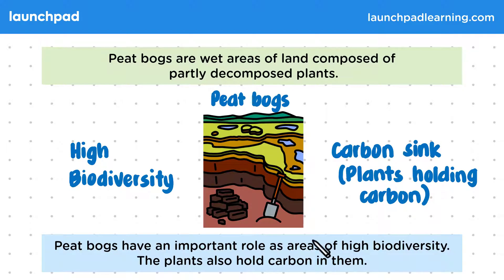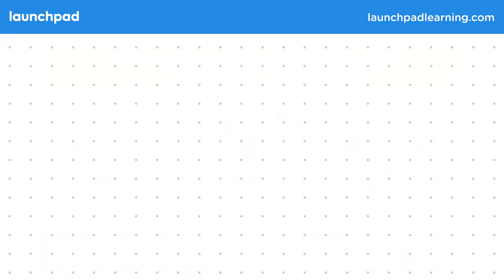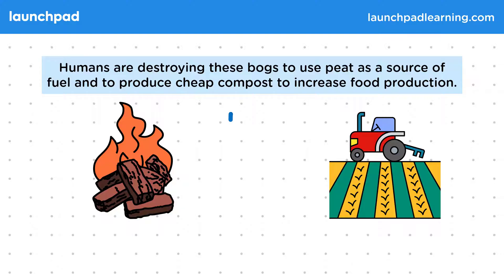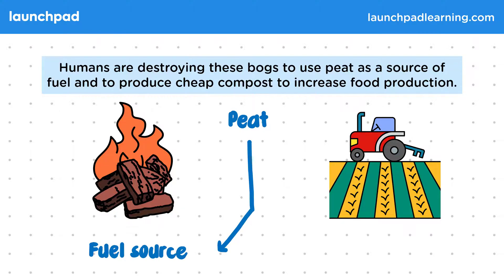So what's the relevance of peat bogs? Humans are destroying these bogs to use peat as a source of fuel and to produce cheap compost to increase food production. Peat can be burned as fuel and the partly decomposed plants can be used to improve soil quality, hence its use in food production.